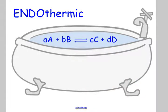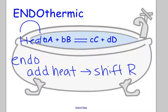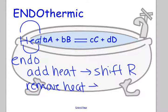Think about endothermic — where do I add the heat? On the reactant side. We're not doing any calculations with Le Chatelier's — you're literally just looking and saying it's endothermic, so heat is always on that side. If I add heat to an endothermic reaction, I shift to the right. And if I remove heat in an endothermic reaction, it will shift left — it'll shift in the reverse direction to create more reactants and more heat. It's like if you cool it down, it's going to do what it has to do to heat itself back up.